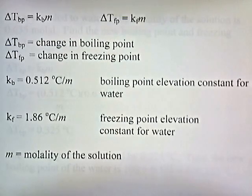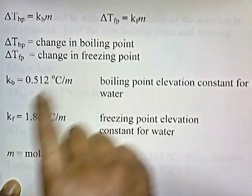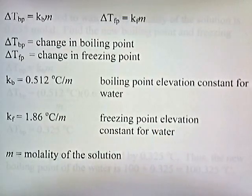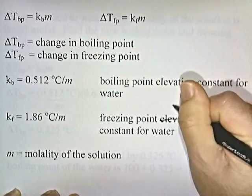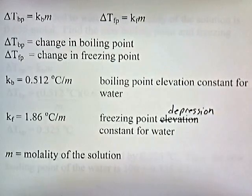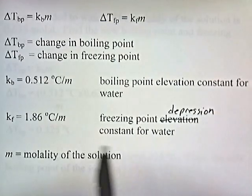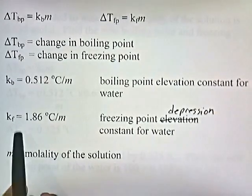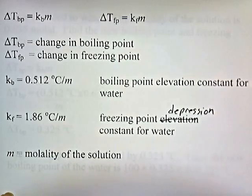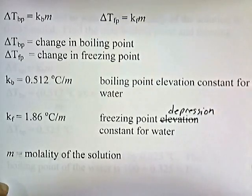KF is the freezing point depression constant for water, equal to 1.86 degrees Celsius per molal. Again, this value is just for water — a different solvent would have a different value for the freezing point constant. The small cursive m is the molality of the solution. Let's use these two formulas to figure out how much the boiling point and freezing point change when we add something to water.